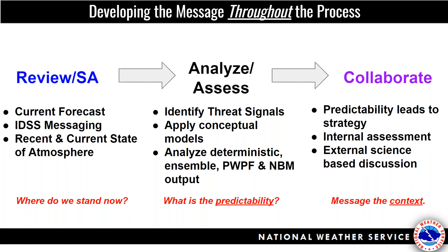What does developing the message throughout the forecast process look like? It all starts with knowing where you're at — what's the ongoing message? Conversations start at the beginning of the shift and continue throughout the day. Next, new data comes in — assess your predictability. What's the situation? What's changed? Has predictability become worse or improved? Seek and apply conceptual models, run that conceptual model through deterministic and ensemble output, interrogate that probabilistic information, run PWPF multiple times throughout your shift. Both the database forecaster and the IDSS forecaster play critical roles here — it's not a duplication of effort. Using the probabilistic information informs predictability and ultimately confidence, giving you a full view of the range of possibilities, failure points, and worst-case scenarios.